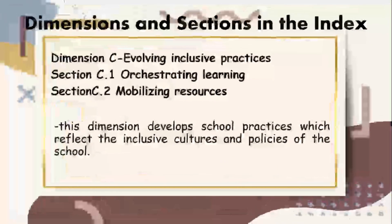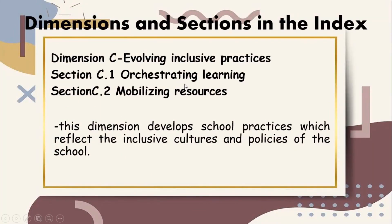The third dimension is dimension C, evolving inclusive practices, with section C.1, orchestrating learning, and section C.2, mobilizing resources. This dimension develops school practices which reflect the inclusive cultures and policies of the schools. Lessons are made responsive to student diversity. Students are encouraged to be actively involved in all aspects of their education, drawing on their knowledge and experience outside the school. Staff identify material resources and resources within each other, the students, parents, carers, and local communities, which can be mobilized to support learning and participation.